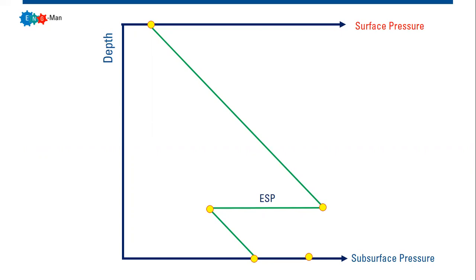As you can see, we have a pressure plot here. On the vertical axis we have depth, and we have two horizontal axes. The bottom one is subsurface pressure or downhole pressure, and at the top side we have surface pressure. So the three axes are: depth, surface pressure, and subsurface or downhole pressure.